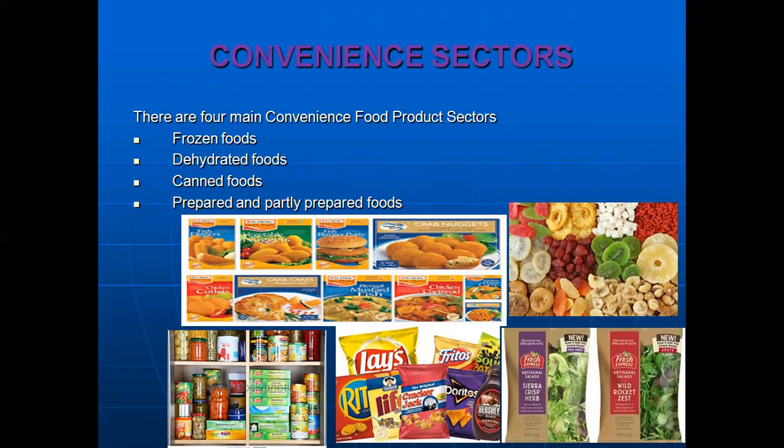Let's move on to the various sectors in convenience food. There are four main convenience food product sectors. The first is frozen food — as you can see in the picture, there are various snacks including burger patties and other things which can be bought frozen. The second sector is dehydrated food, where you can see dry fruits which are commonly used at home. The third sector is canned food — various cans of beans, tomatoes, pickles, and gherkins that we use in tins.